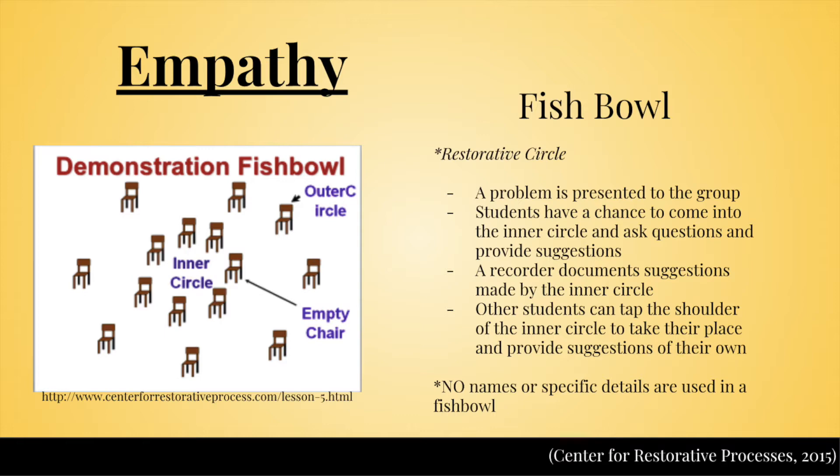The next activity is a restorative practice. We also saw this activity in the case study for Leah earlier in this step. A restorative circle can be used when students are struggling with a problem and don't know how to share with the rest of their community. The fishbowl tactic is something I learned from the Centre for Restorative Practices. It's important that students know that no names or specific details can be used in a fishbowl, but students have a chance to make suggestions and connect with other people based on the problems they're having.